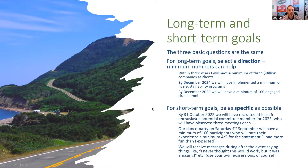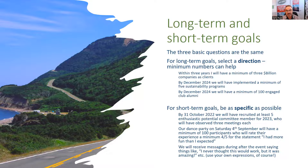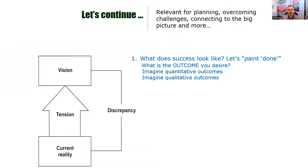On the flip side, for short-term goals — things happening in a relatively short period of time — you want to be as specific as possible. For example: by 31 October 2022, we will have created at least five enthusiastic potential committee members for 2023, who will have observed three meetings each. Or: our dance party on Saturday the 4th of September 2022 will have a minimum of 100 participants who will rate their experience a minimum of four out of five for the statement 'I had more fun than I had expected.' We will receive messages during and after the event saying things like 'I never thought this would work, but it was amazing.'